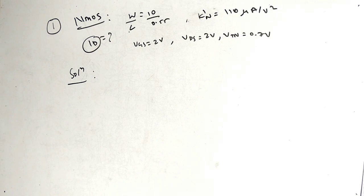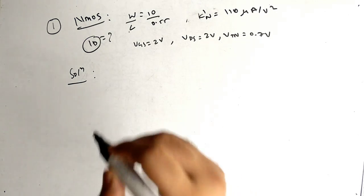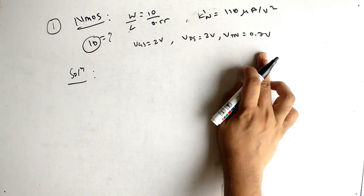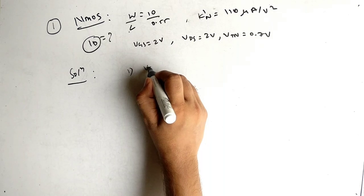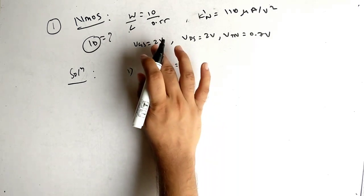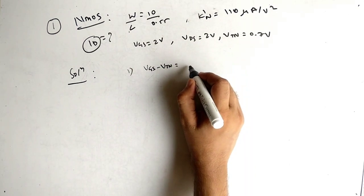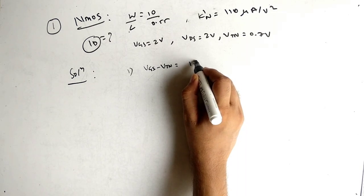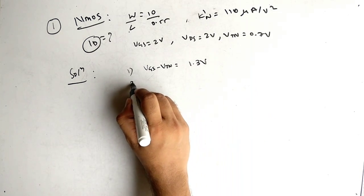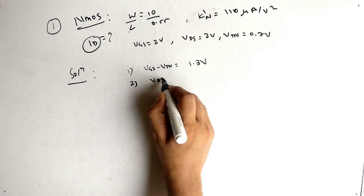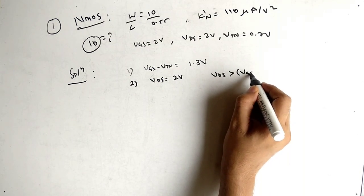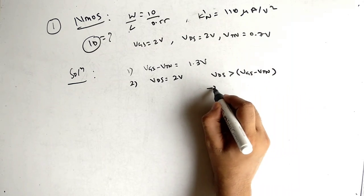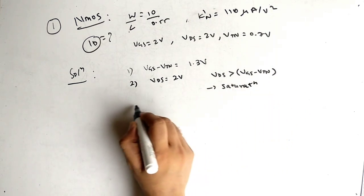First, determine the region. Find VGS − VTN = 2 − 0.7 = 1.3 V. VDS = 2 V. Since VDS (2 V) is greater than VGS − VTN (1.3 V), the device is in saturation.